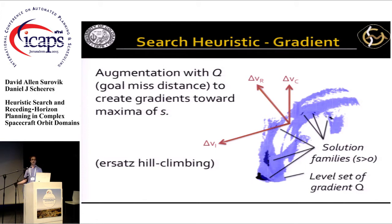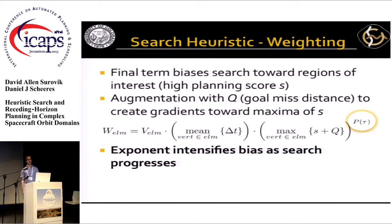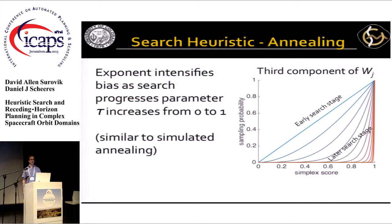This is kind of a substitute for hill climbing — it allows you to hone in on very tough-to-reach or tough-to-identify solutions. There's an exponent on this term which increases as the search progresses, so near the end of the refinement process only the very best scoring volume elements are selected for additional sampling. This is quite similar, maybe even identical, to simulated annealing.